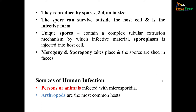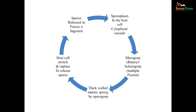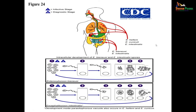Sources of human infection are persons or animals infected with Microsporidia; arthropods are also common hosts. Mode of transmission can be ingestion of spores from feces and urine contamination, as seen in Enterocytozoon species; aerosol route in certain other species where infection is through sputum and respiratory samples; or direct inoculation as seen in corneal-conjunctival infection via contaminated fingers or aerosol. Spores are released in feces, sporoplasm enters the host cell, cytoplasmic vacuole forms, merogony and schizogony take place, thick-walled mature spores are produced, and the host cell ruptures and releases them.